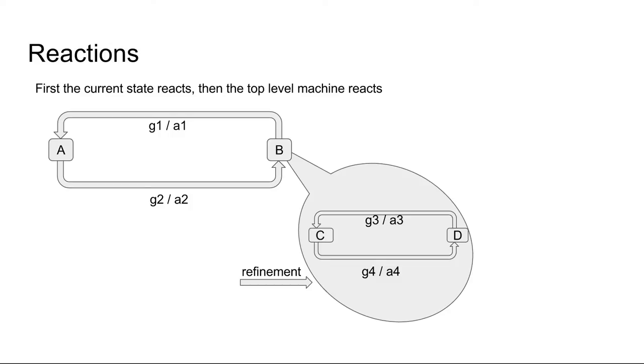For example, when I am in state B and the machine reacts, both guards G1 and G4 are both enabled. Then the refinement reacts first. I go from C to D and produce output A4.